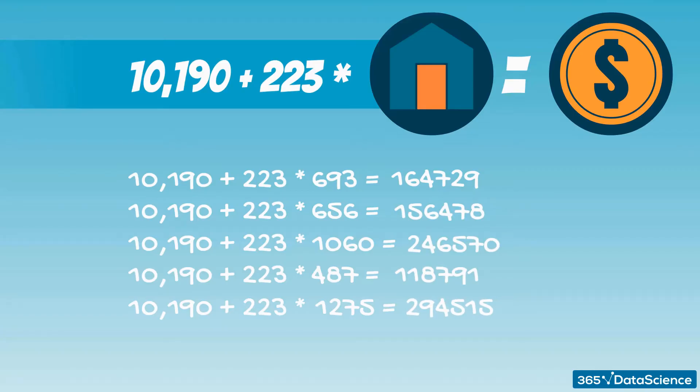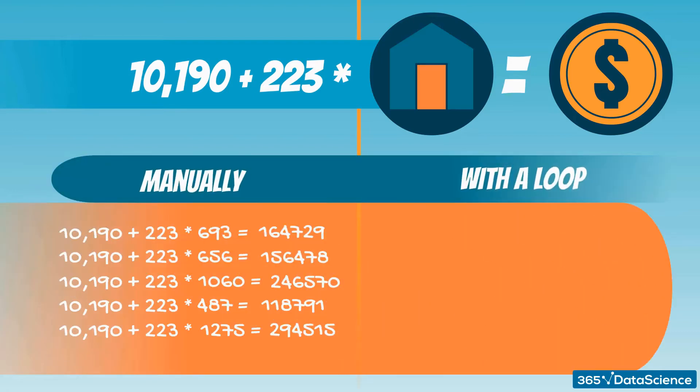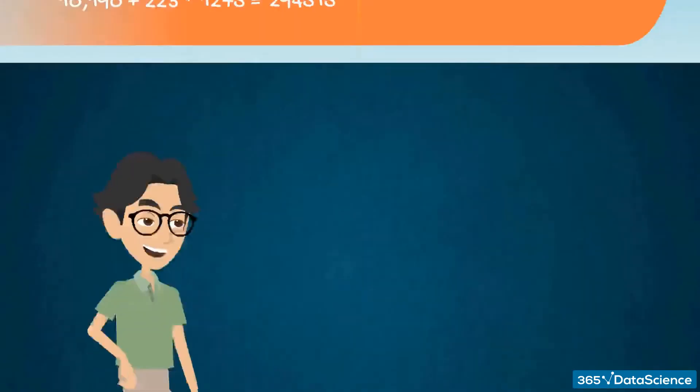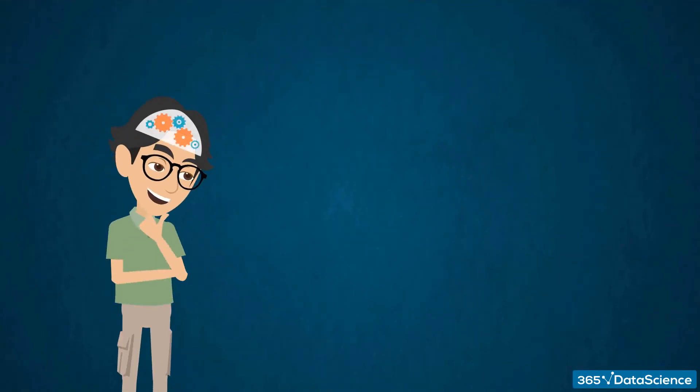Now, if we have 100 houses, doing that by hand would be quite tedious, wouldn't it? One way to deal with that problem is by creating a loop. You can iterate over the sizes, multiplying each of them by 223 and adding 10,190. However, we are smarter than that. We know some linear algebra already.